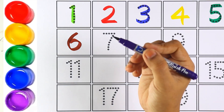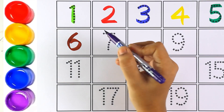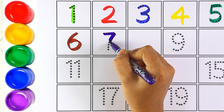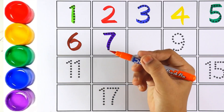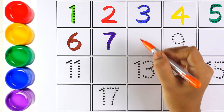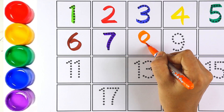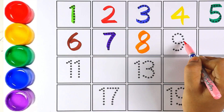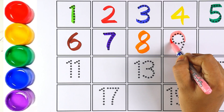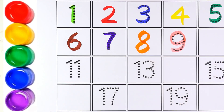All right, let's move on to the next number, which is seven. I'm using purple color for number seven. Number seven. Orange color, number eight. Which number is this, kids? Number eight. Light pink color, number nine. Which number is this, kids? Number nine.